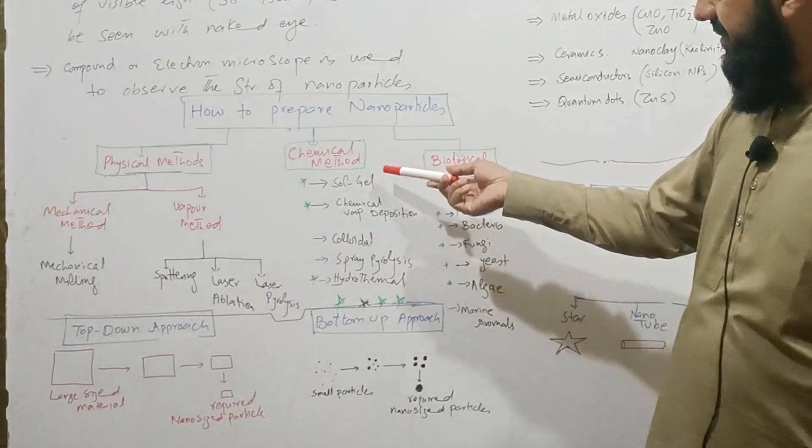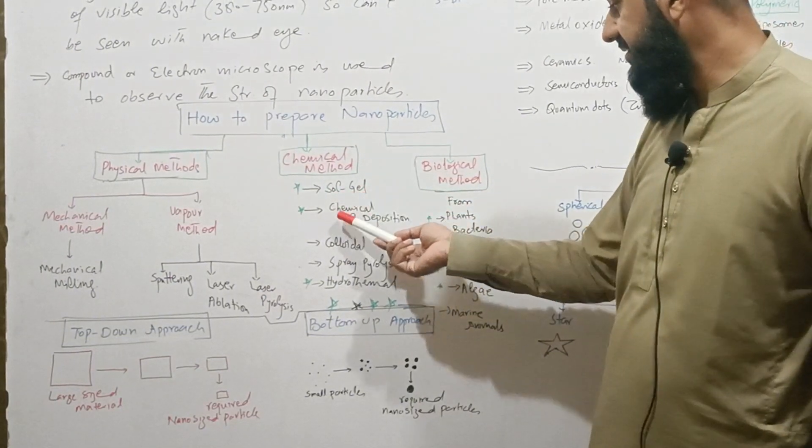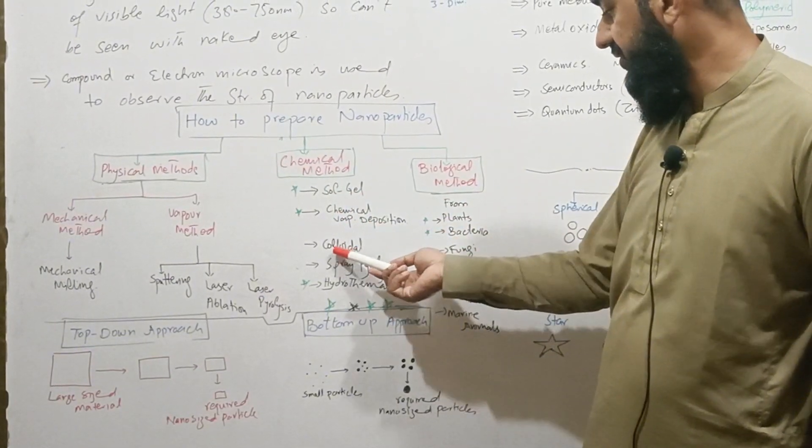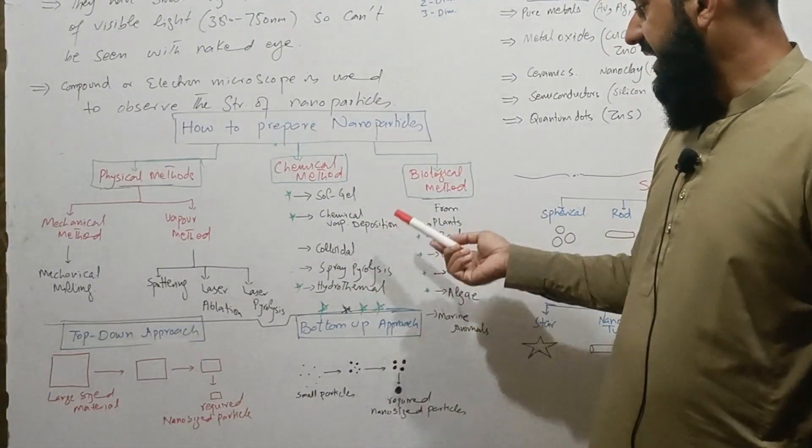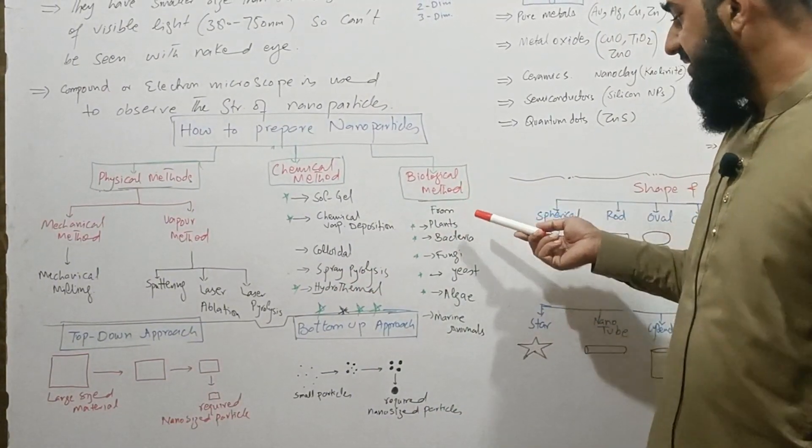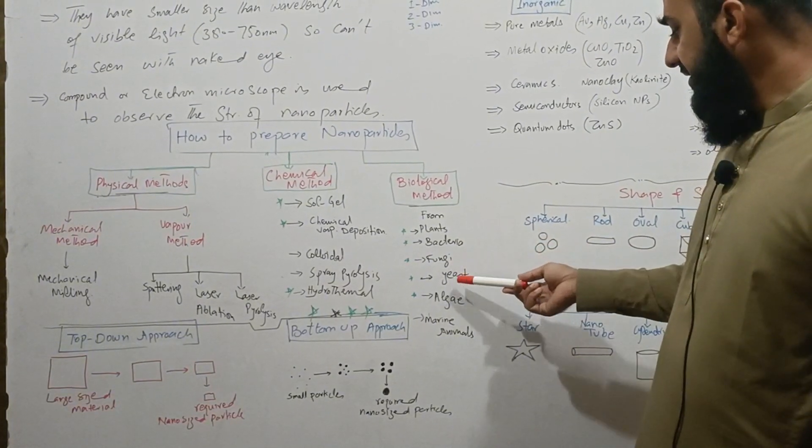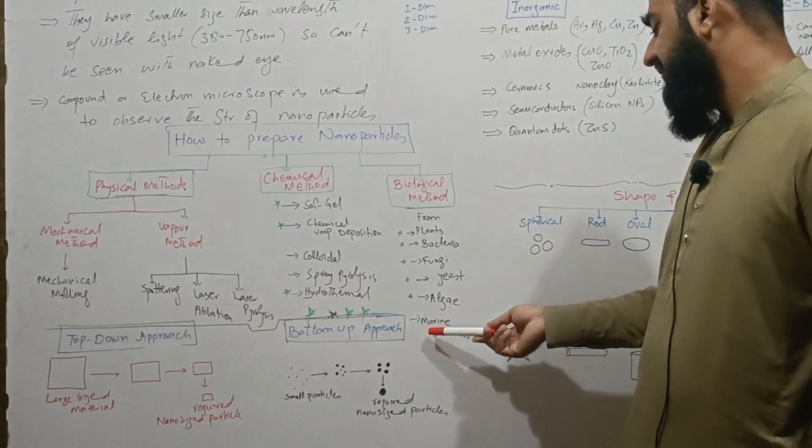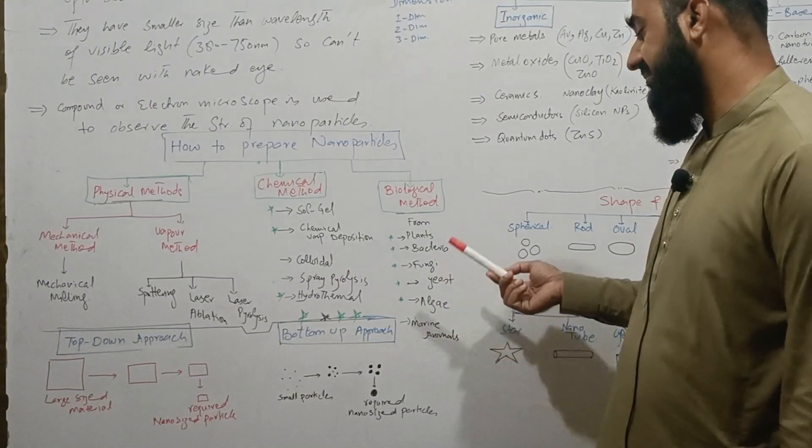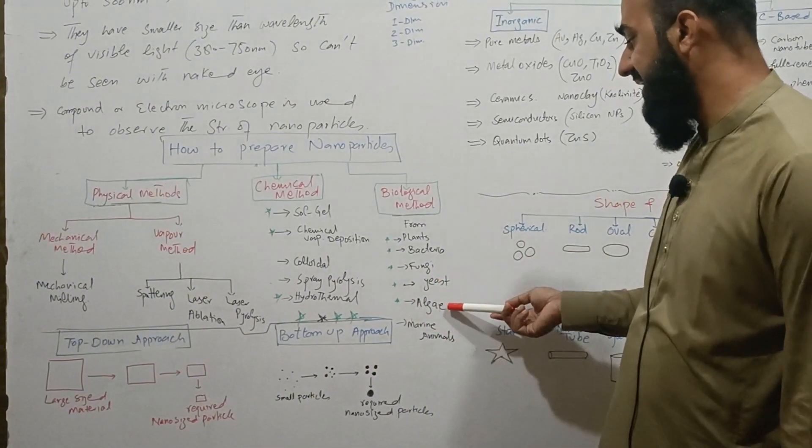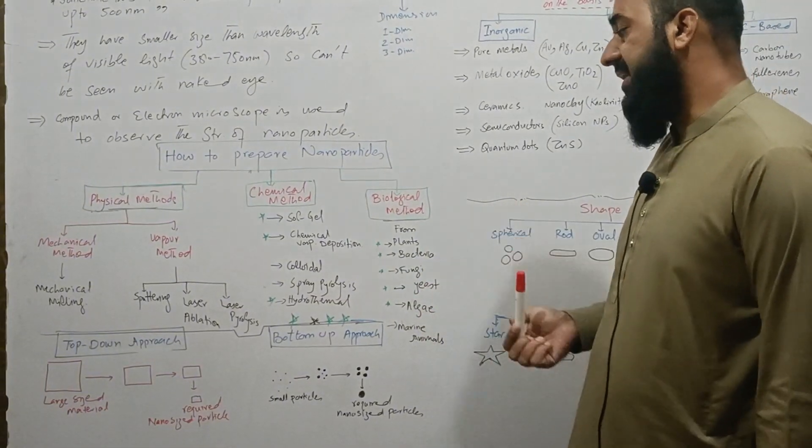Common chemical methods we use to synthesize nanoparticles are sol-gel method, chemical vapor deposition, colloidal, spray pyrolysis, and hydrothermal method. In biological method we use plant extract, bacterial synthesis, fungal, yeast, algal, or we can synthesize particles from marine animals by using their biological system, their biomass or their extract through which we can synthesize the nanoparticles.